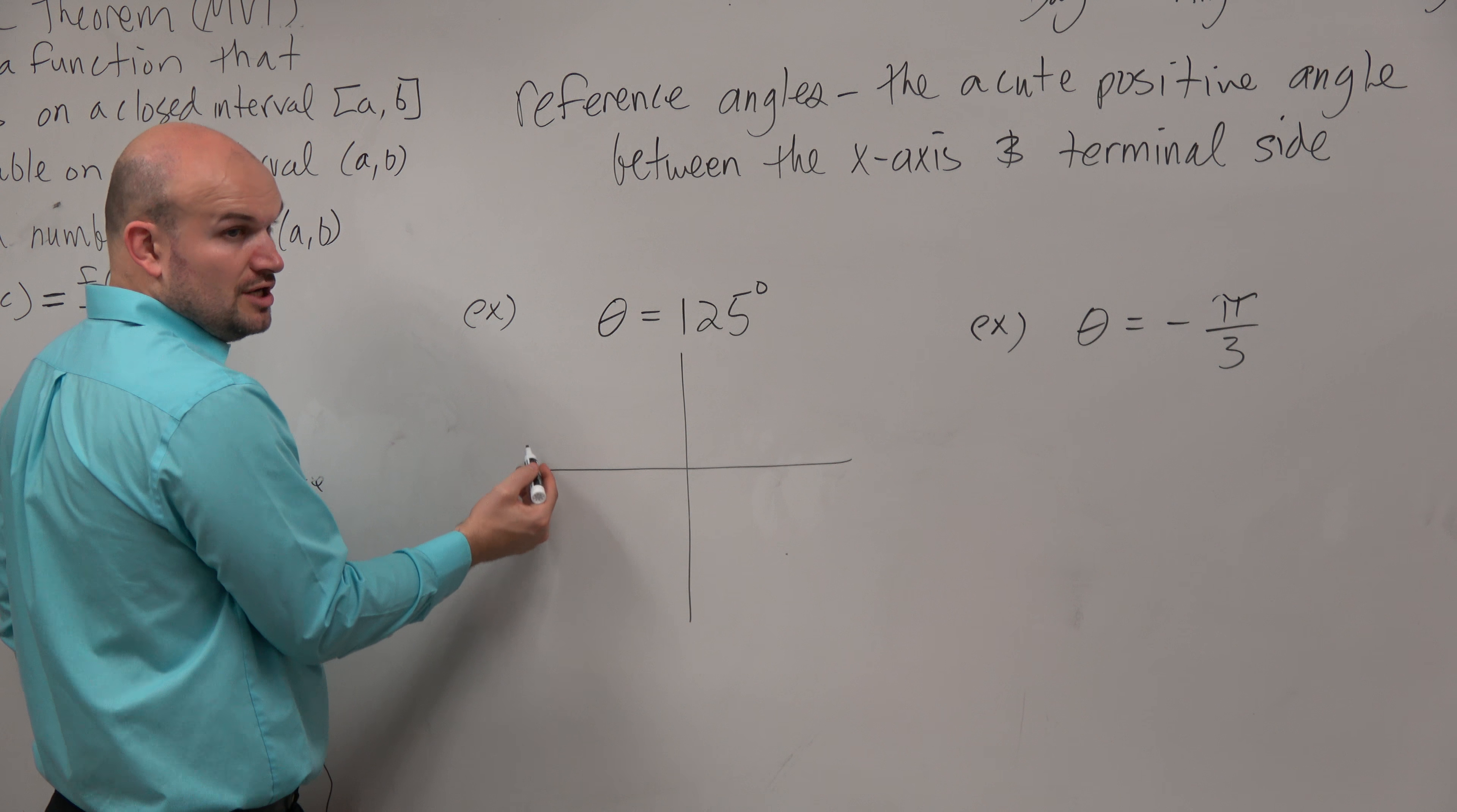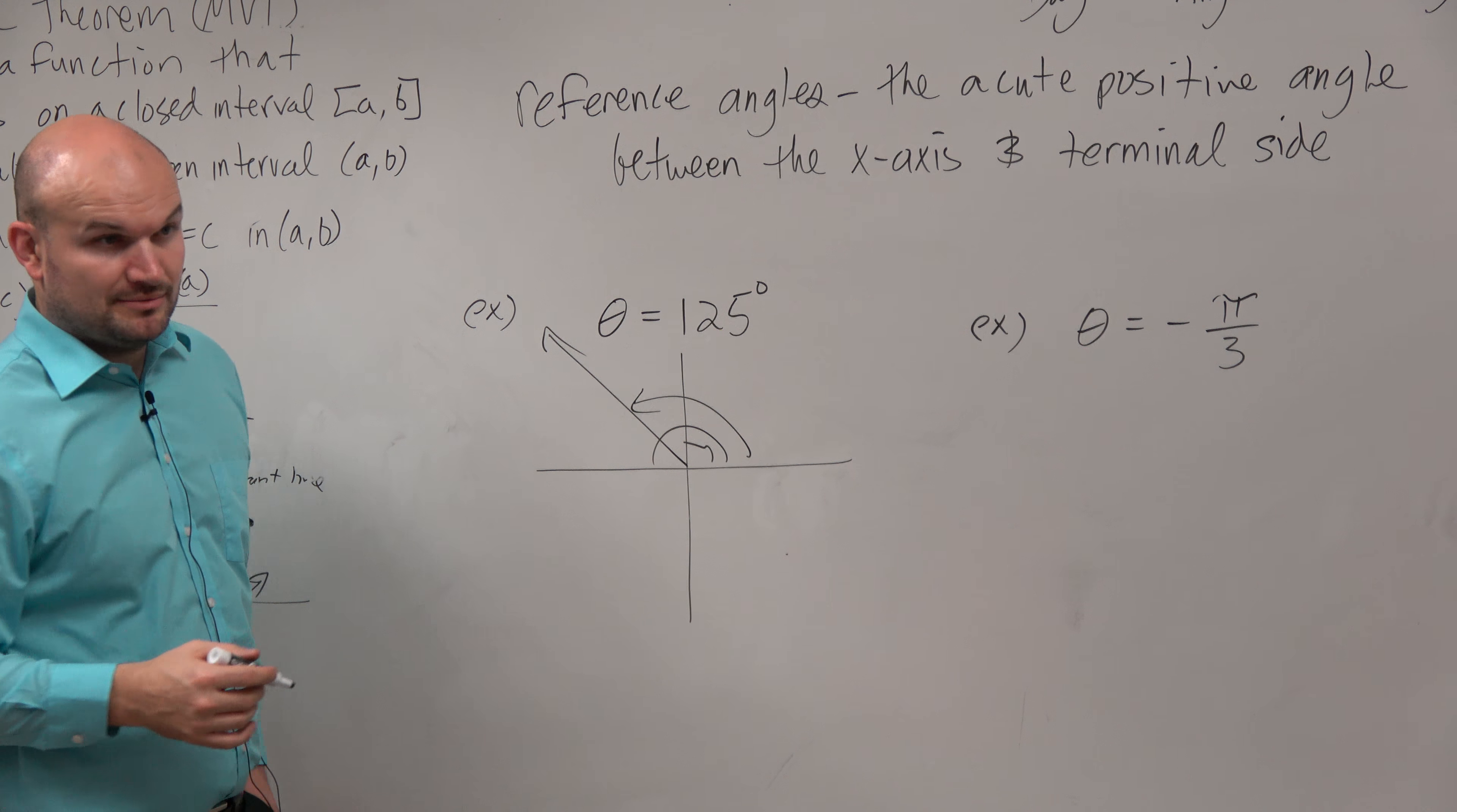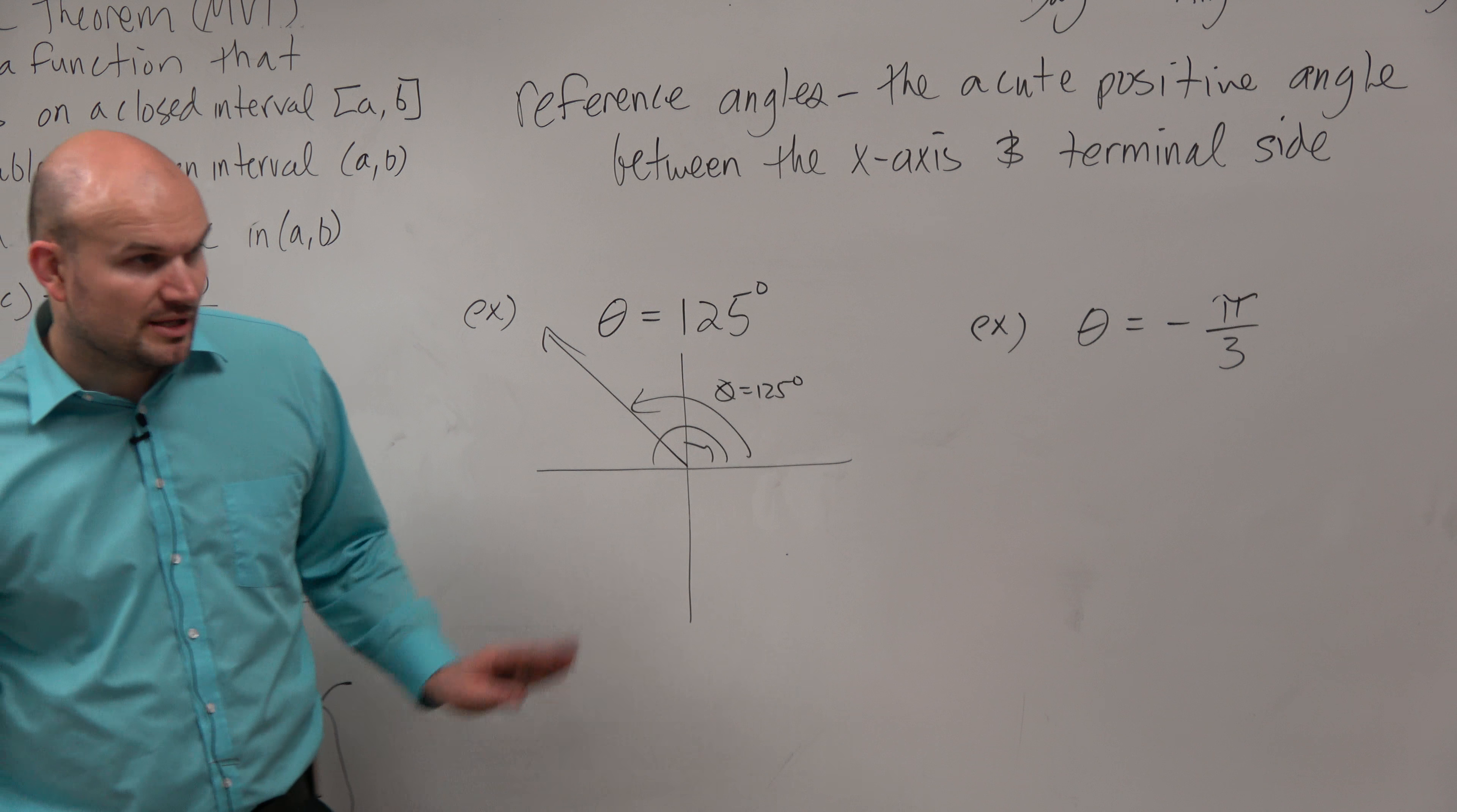125 degrees. We know halfway around the circle is 180, right? Here's 90, there's 180. So 125 is roughly right there. Would you guys agree with me? Theta equals 125. That looks about right, correct? Would everybody at least agree with that?